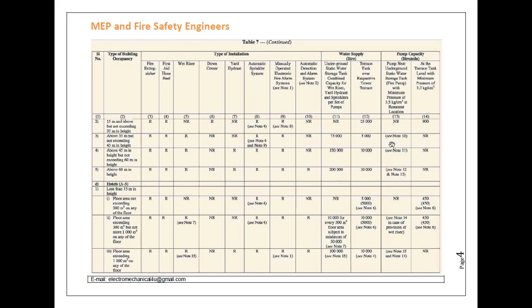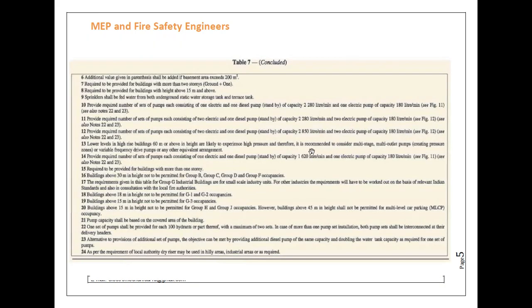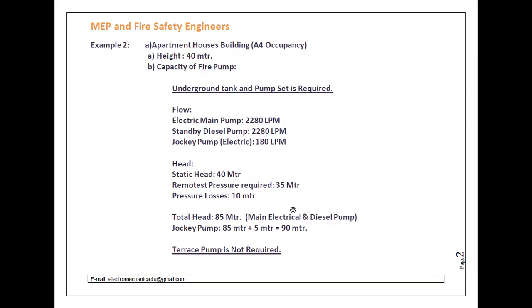Let's see Note 10. Below this table, notes are given. Note 10 clearly says: provide the required number of sets of pumps, each set consisting of one electrical pump and one diesel pump as standby, each of capacity 2280 LPM, and one electrical jockey pump of capacity 180 LPM. So for Example 2, the electrical pump and diesel pump are 2280 LPM, and the jockey pump is 180 LPM.